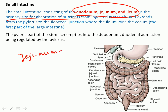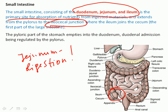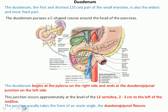The small intestine extends from the pylorus to the ileocecal junction where the ileum joins the cecum, which is the first part of the large intestine. The pyloric part of the stomach connects with the duodenum, with duodenal admission regulated by the pylorus — which in Latin or Greek means 'gatekeeper.' The duodenum is approximately 25 centimeters in length, a little less than one foot, and is the first, widest, and most fixed part of the small intestine.